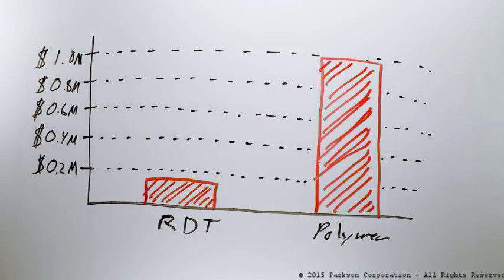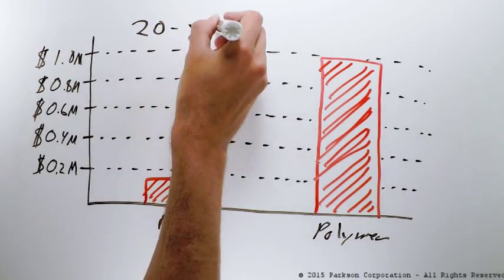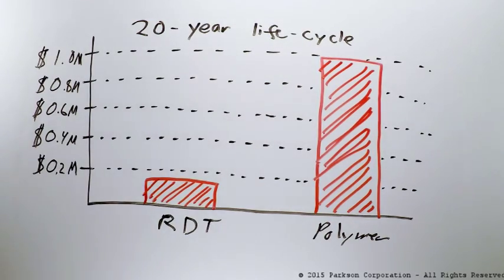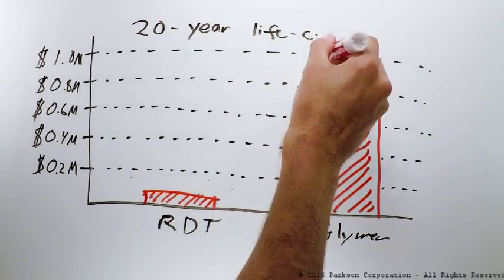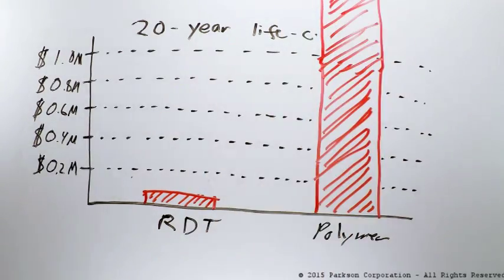Yet unlike cell phones, our industry still chooses thickeners predominantly on capital cost. A thickener that may be half the cost up front that is not efficient could double the operational costs, and these upfront savings are quickly swallowed.